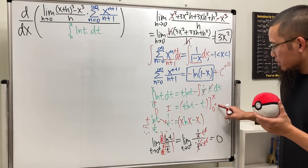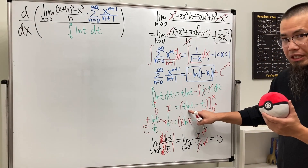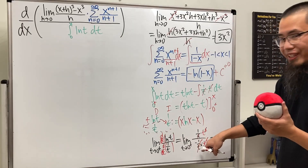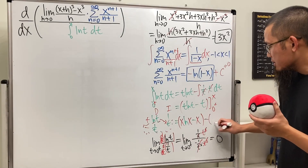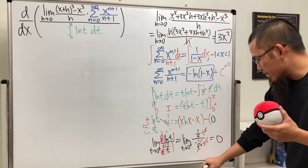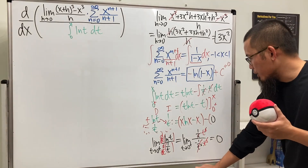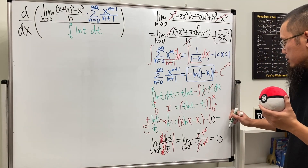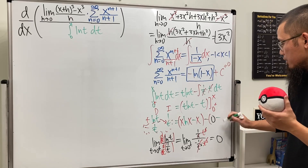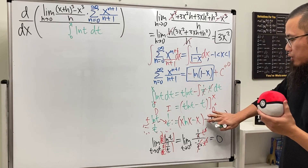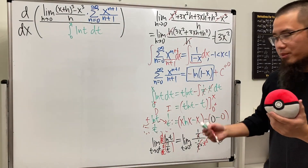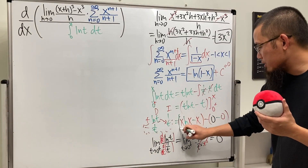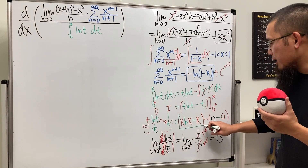So when we plug in 0⁺ we legitimately get zero. Therefore the lower bound contribution is zero, and the integral from 0 to x of ln(t) dt equals x·ln(x) − x.